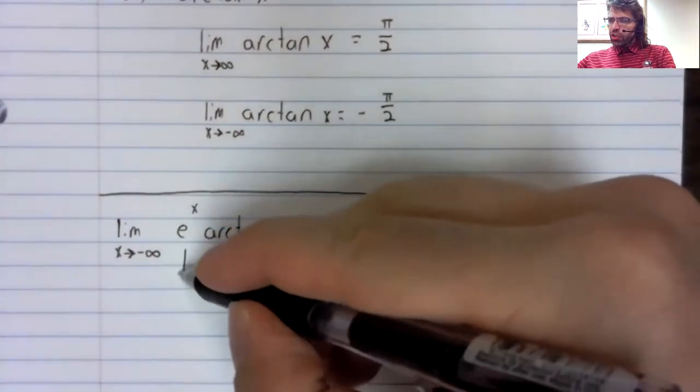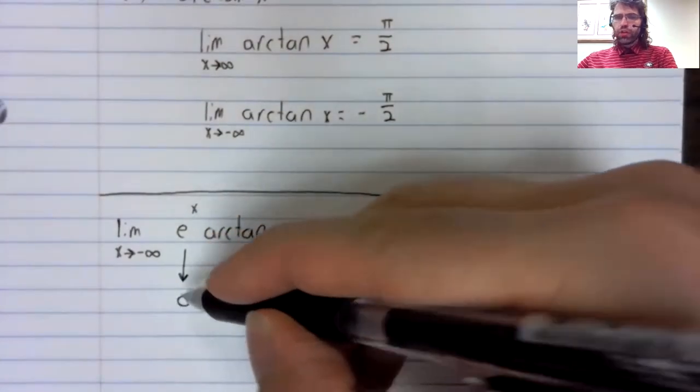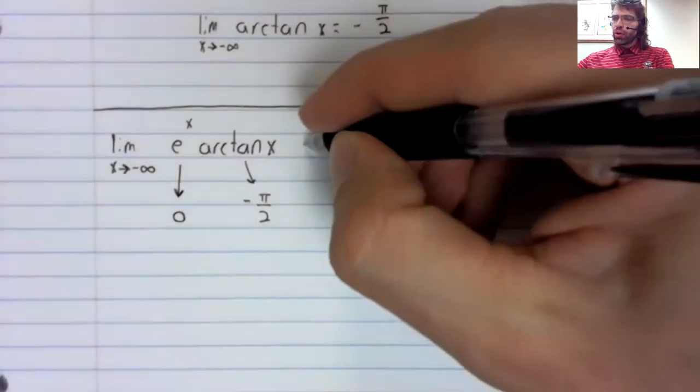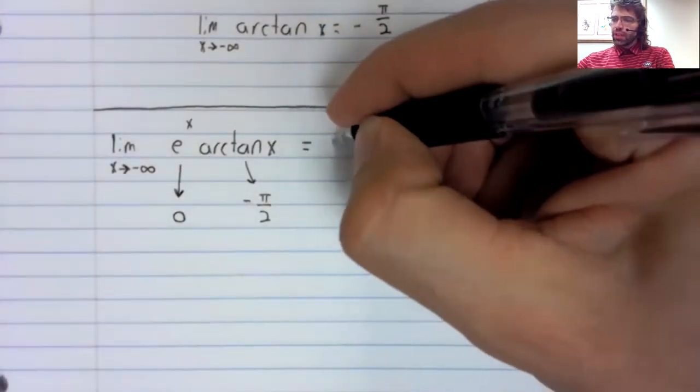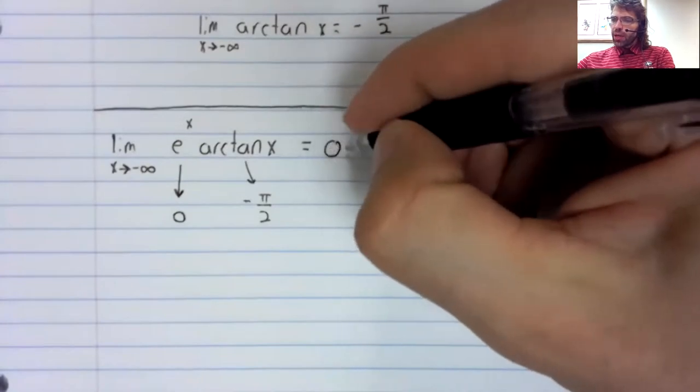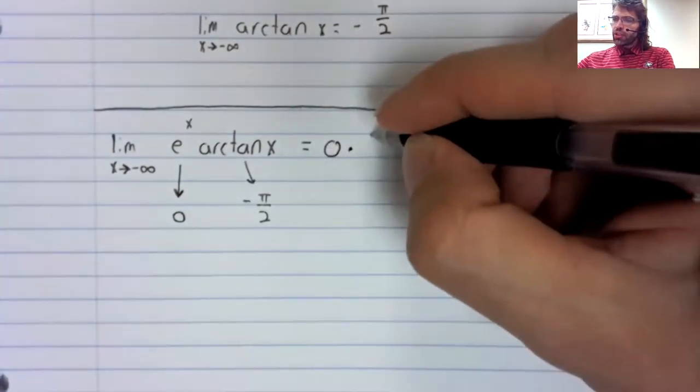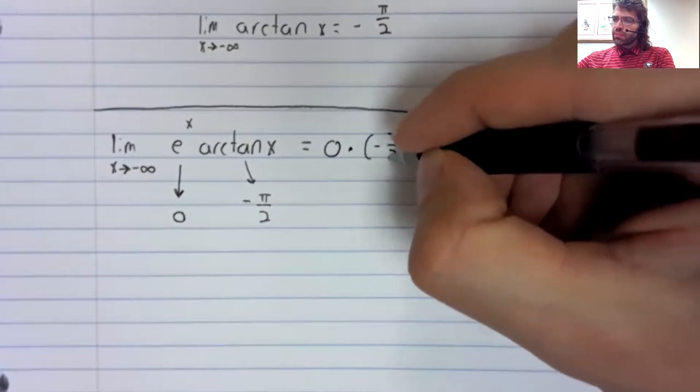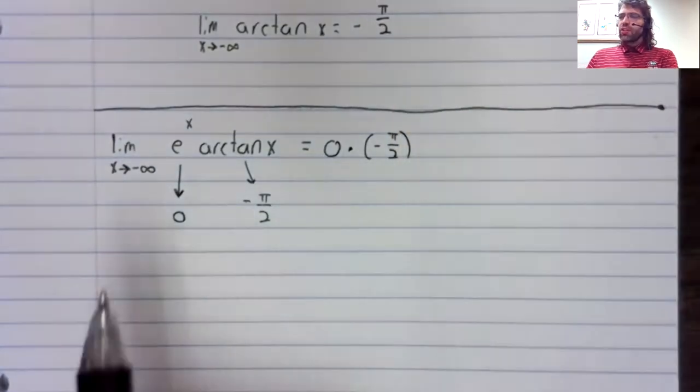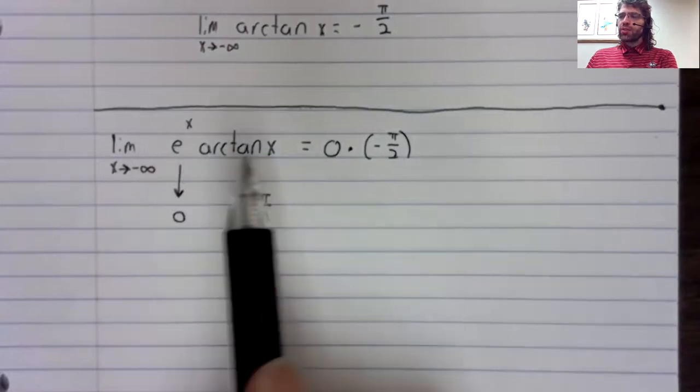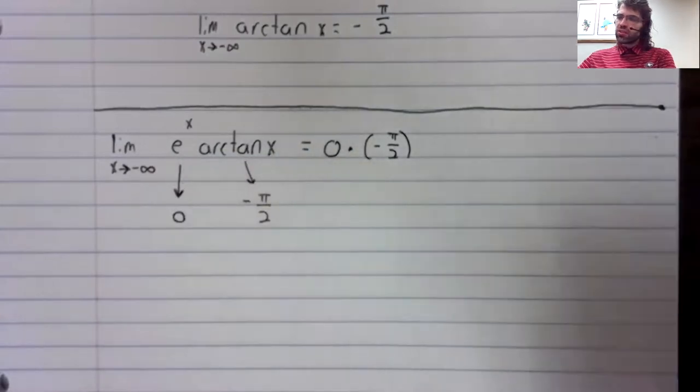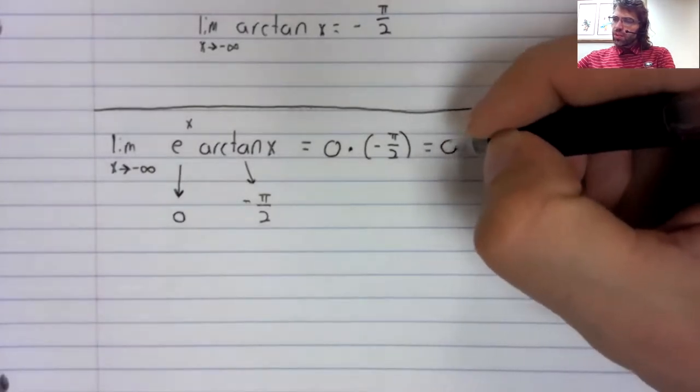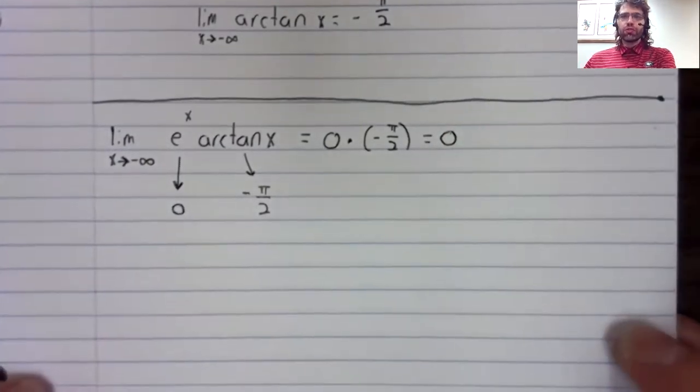One function is going to zero. The other is going to negative π over 2. And the limit of a product is the product of the limits. This is going to zero.